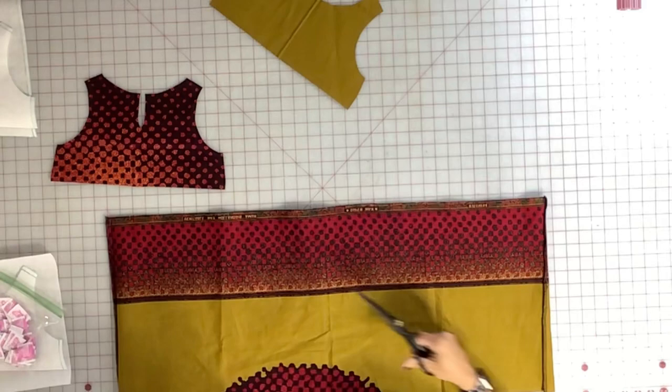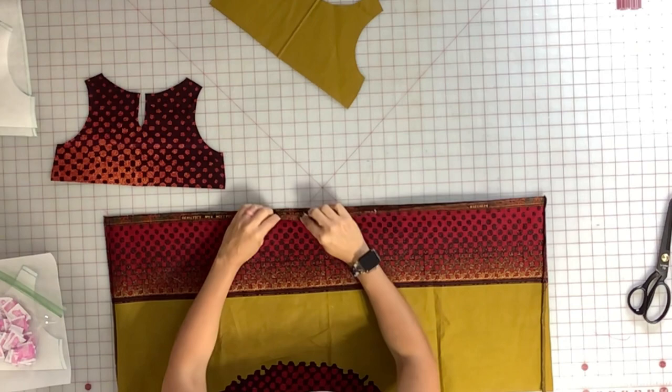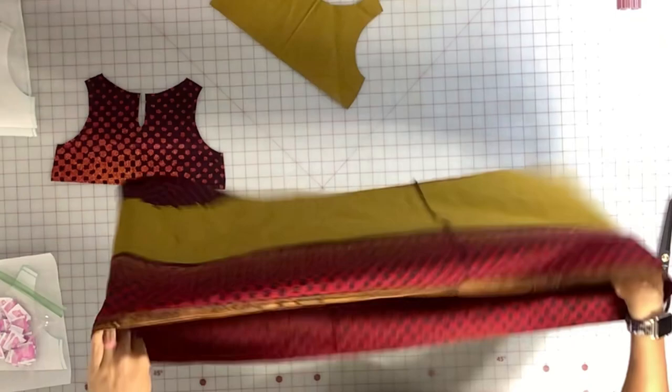So now we need to hem this. I'm going to take this selvage edge here and I'm going to press it up and then I'm just going to sew that around. So let's go to the sewing machine. Okay so this is what it looks like when it's all pressed and sewn together.